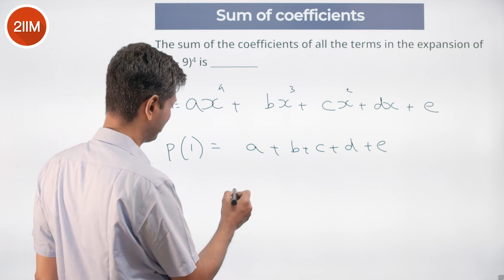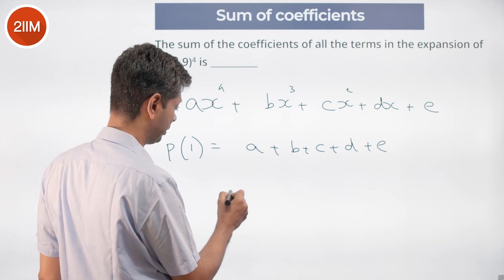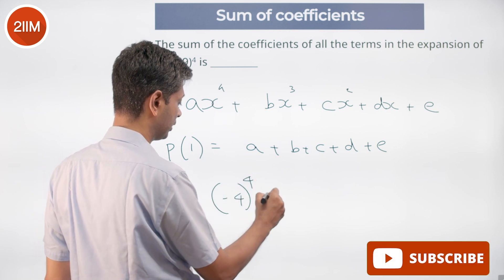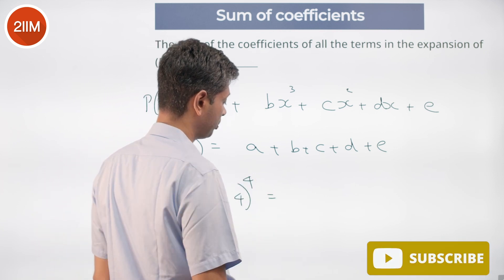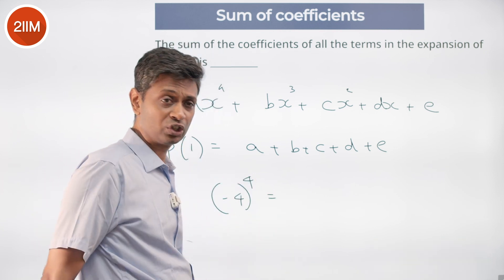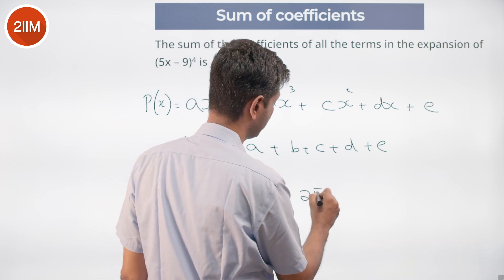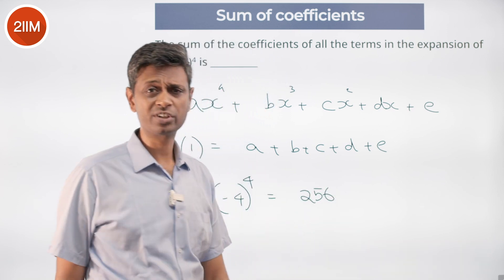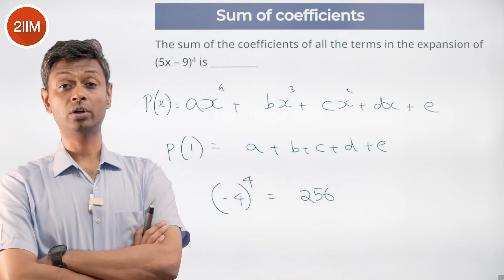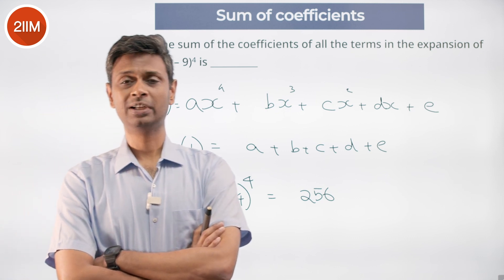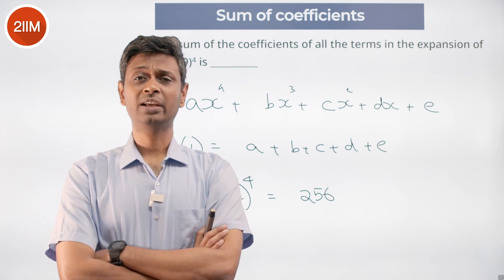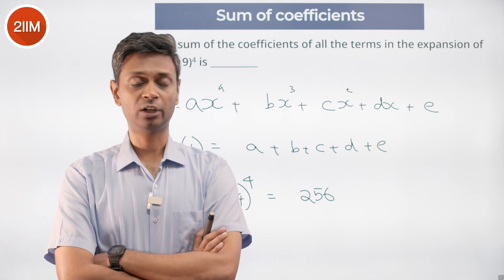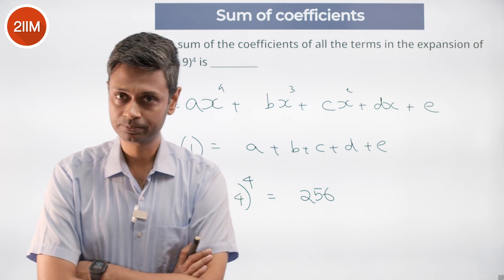If I put x equal to 1: 5 into 1 minus 9 equals 5 minus 9 equals negative 4, whole power 4, which is (-4)^4 = 256. The sum of all coefficients is probably the easiest question in this whole lot of binomial theorem. Just plug in x equal to 1, expand the expression, and find the numerical value.